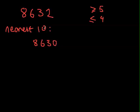However, if we consider if this number was 8,635 to the nearest 10, so that's our 10th 3 there, and the 5, the number next to it is actually 5.